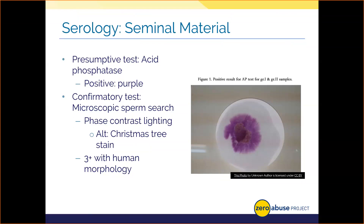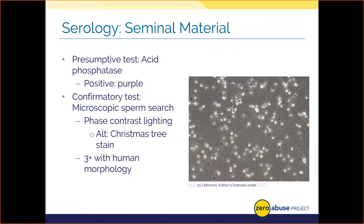Let's talk about seminal material confirmatory tests. One major method used is microscopic sperm searches — we search for spermatozoa or sperm under a microscope. We can't use traditional bright field lighting because sperm are so microscopic they're nearly impossible to see in that format. Phase contrast lighting is used instead, requiring a special lens that bends and slows down light as it passes through the slide, making normally transparent things appear visible.